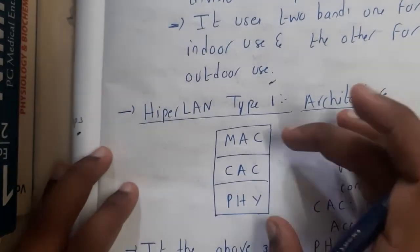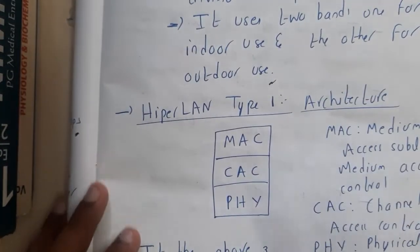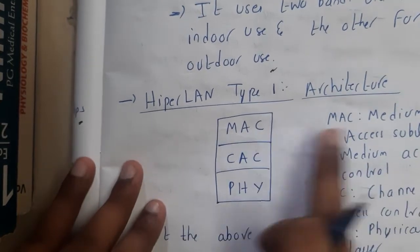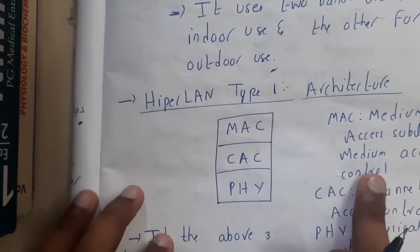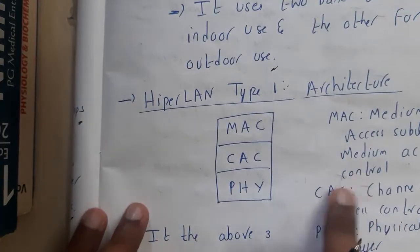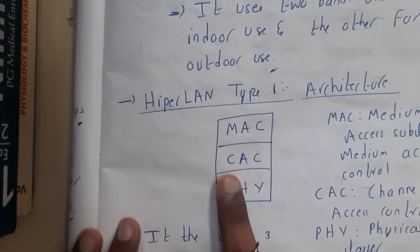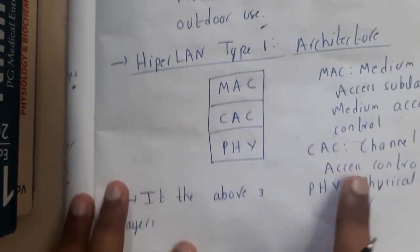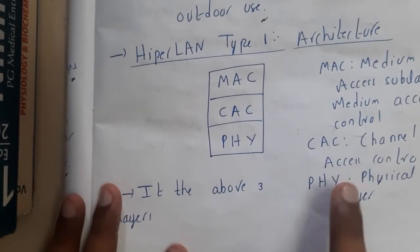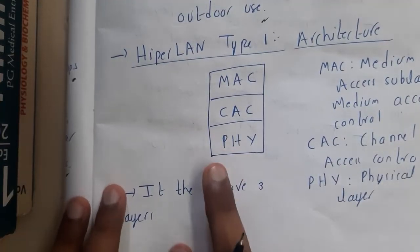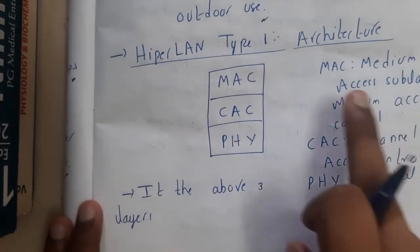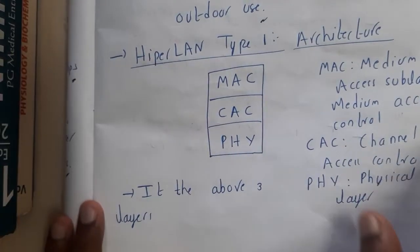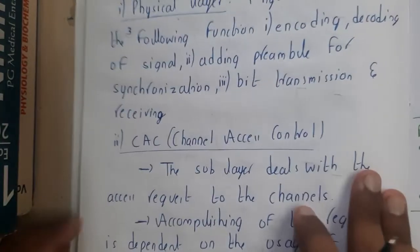The HiperLAN Type 1 architecture has only three layers. The first layer is the MAC layer — that is, the Medium Access Control layer. The second layer is CAC — Channel Access Control. The third layer is PHY — the Physical layer.